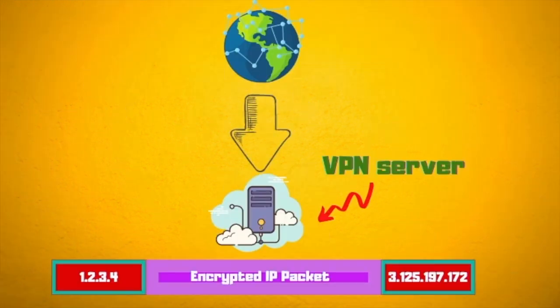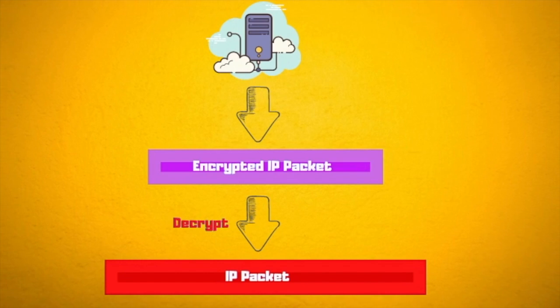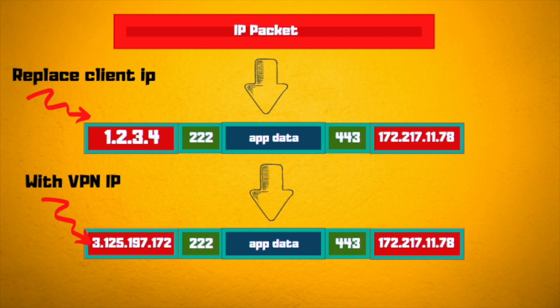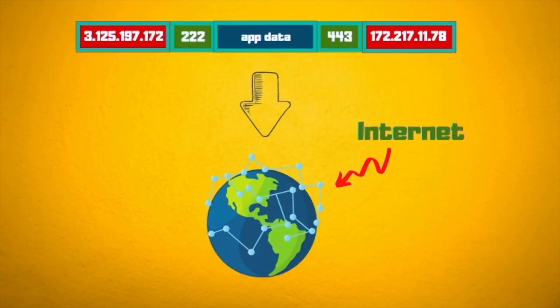The VPN server will receive your IP packet, and because you have previously established a session with the VPN, it knows it's you. It will decrypt that content, find out it's actually you, and once it decrypts that packet it will know where you essentially want to go — in this case, google.com. It will then change your client IP address to its own so that it communicates to google.com on your behalf. That new IP packet is sent to the internet, and to Google they will only see that the VPN is talking to them.